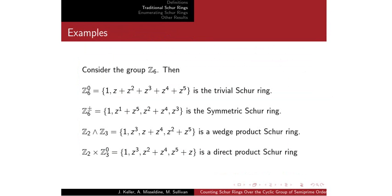Moving on to an example, consider the group Z₆. The trivial Schur ring takes {1} by itself and everything else in the second partition. The symmetric Schur ring takes {Z₁, Z₅}, {Z₂, Z₄}, and {Z₃}, pairing each element with its respective inverse. We also have the wedge product Schur ring Z₂ wedge Z₃ and the direct product of Z₂ and Z₃. These also include the discrete Schur rings of those subgroups — so the direct product of the discrete over Z₂ and the trivial over Z₃ forms another direct product Schur ring.